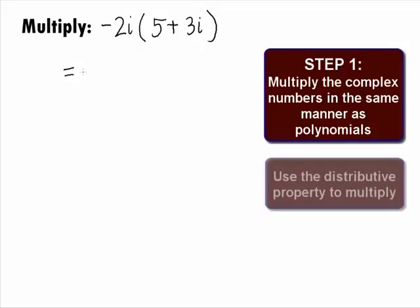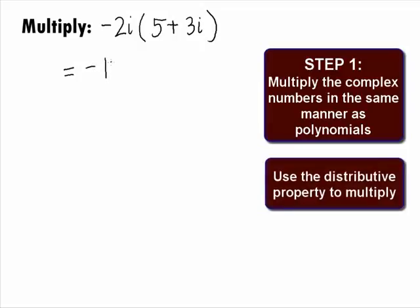In this problem, we can use the distributive property to multiply the negative 2i times both the 5 and 3i. When we do this, we get negative 10i minus 6i squared.